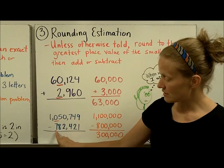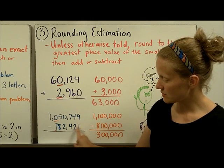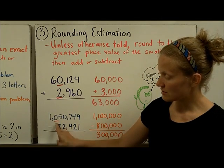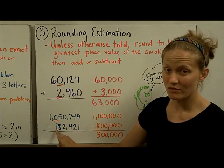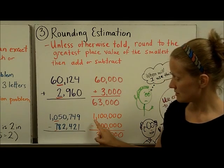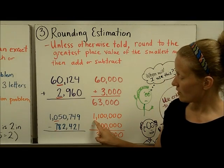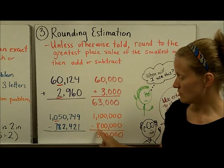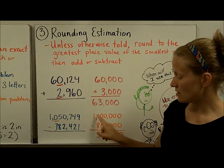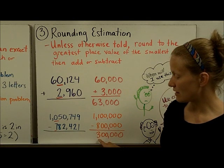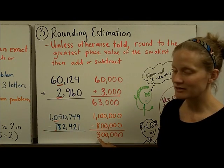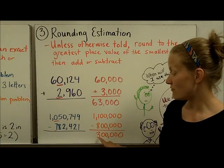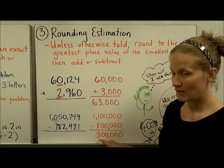Here, this one is my smallest number. It falls in the hundred-thousands place, so I round both numbers to the hundred-thousands place. One becomes 1,100,000 and the other becomes 800,000. When I subtract, I get an estimated difference of 300,000.